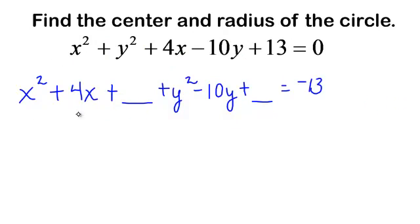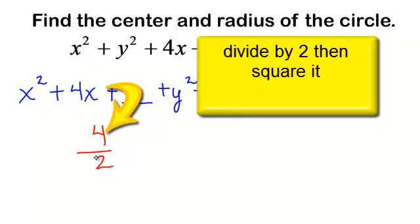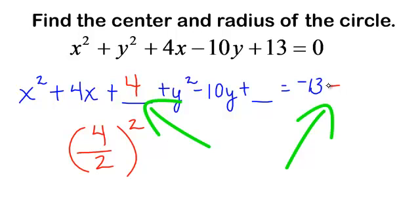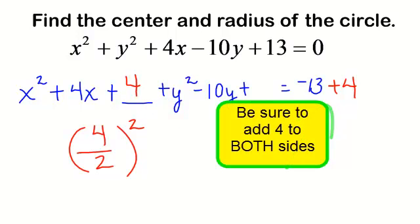For my x's, look at your x to the first, you have 4. You will take 4, divide it by 2, and then you will square it. Well, 4 divided by 2 is 2, squared is 4. To complete this square for the x's, I need to add 4. But if you add 4 to one side, you have to add 4 to the other side. It's not your birthday.